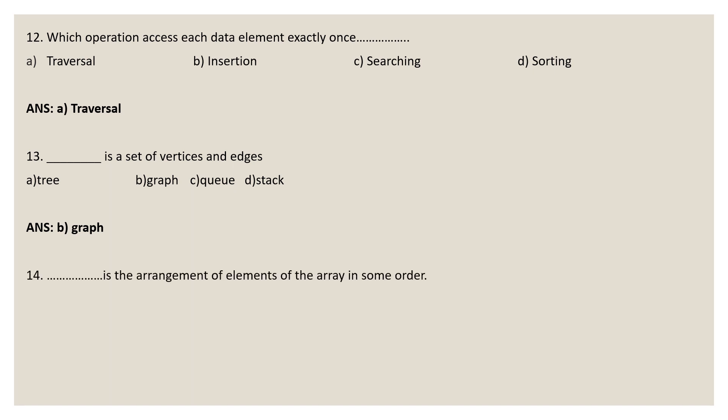Question 14: what is the arrangement of elements of an array in some order? Options: sorting, searching, traversal, none of these. The correct answer is sorting, because sorting is the arrangement of elements of an array in some order — either ascending or descending. Sorting is the process of arranging elements in a particular order.